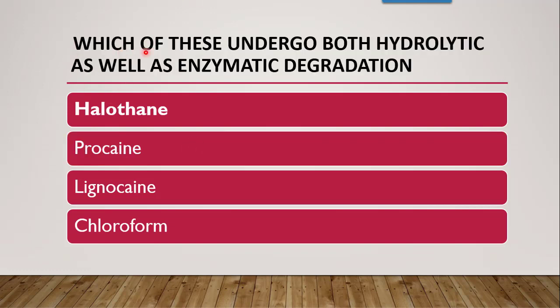Next question: which of these undergoes both hydrolytic as well as enzymatic degradation? Procaine is more unstable — it undergoes hydrolysis and further oxidation, and it also undergoes enzymatic degradation by the esterase enzyme, which hydrolyzes the ester group. The correct answer is procaine.